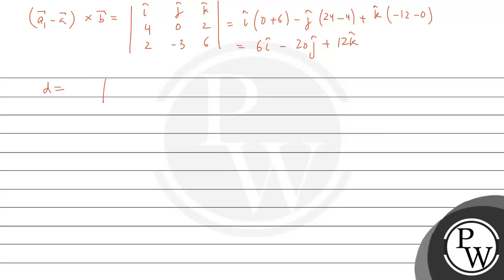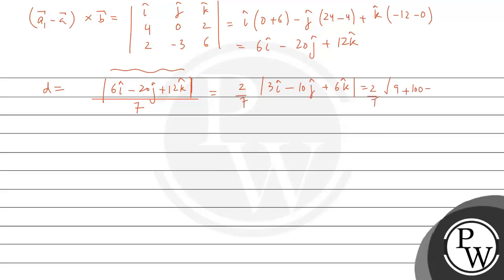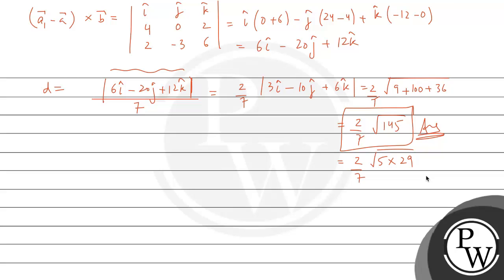Now putting all values into the distance formula: magnitude of (6i cap − 20j cap + 12k cap) divided by 7. Taking 2 as common gives (2/7) times magnitude of (3i cap − 10j cap + 6k cap), which equals (2/7)√(9 + 100 + 36) = (2/7)√145. So the distance between the two lines is (2/7)√145. Thank you.